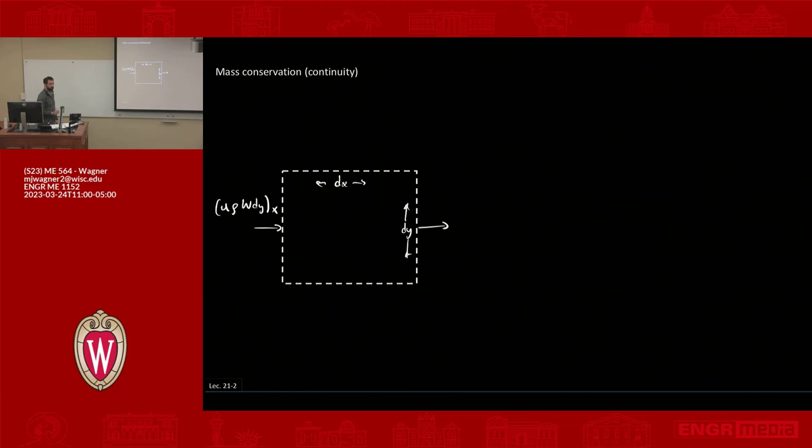That's evaluated at position x. Coming out we have the same thing that came in but there's a potential that it could change, there's a potential that there's a rate of change through this volume and we have to reflect that in our balance. So coming out would be u times ρ times w dy at x plus dx.